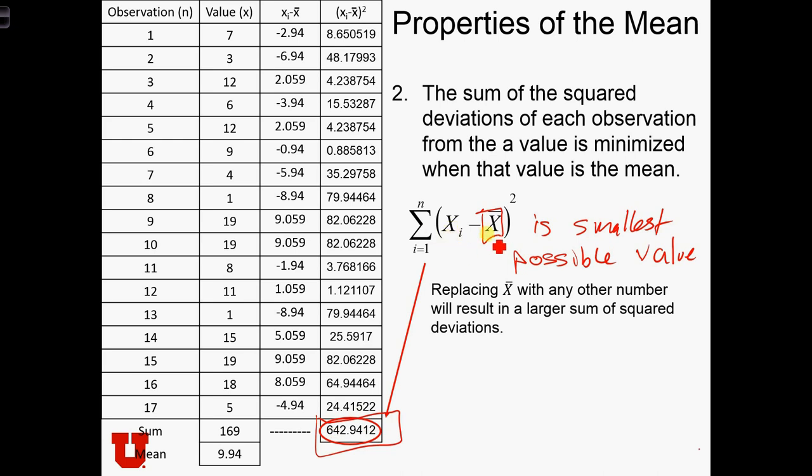So in order to calculate the sum of the squared deviations, the first step is we had the xi minus x̄, those are the actual deviations calculated, and then we're just going to square each of these numbers. So 2.94 squared equals 8.65, 6.94 squared equals 48, and so on. This column contains the squared deviations. When we sum this column up, we end up with the sum of the squared deviations, and that equals 642.9. This property of the mean is that 642.9 is as small a number as you can get when calculating deviations. If we were to replace x̄ in this formula with some other number and recalculated this column, we would get some number that is guaranteed to be bigger than 642.9.